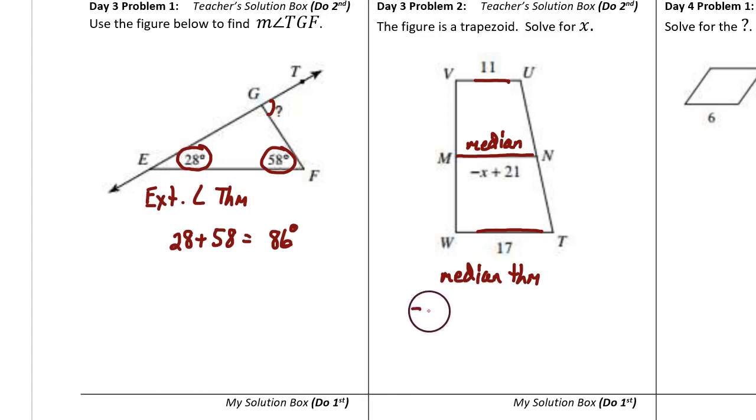We can write an equation from that. The median, that's the X plus 21, is equal to the average of the bases. What's the average of 11 and 17? What number is exactly in the middle between 11 and 17? That number is 14.